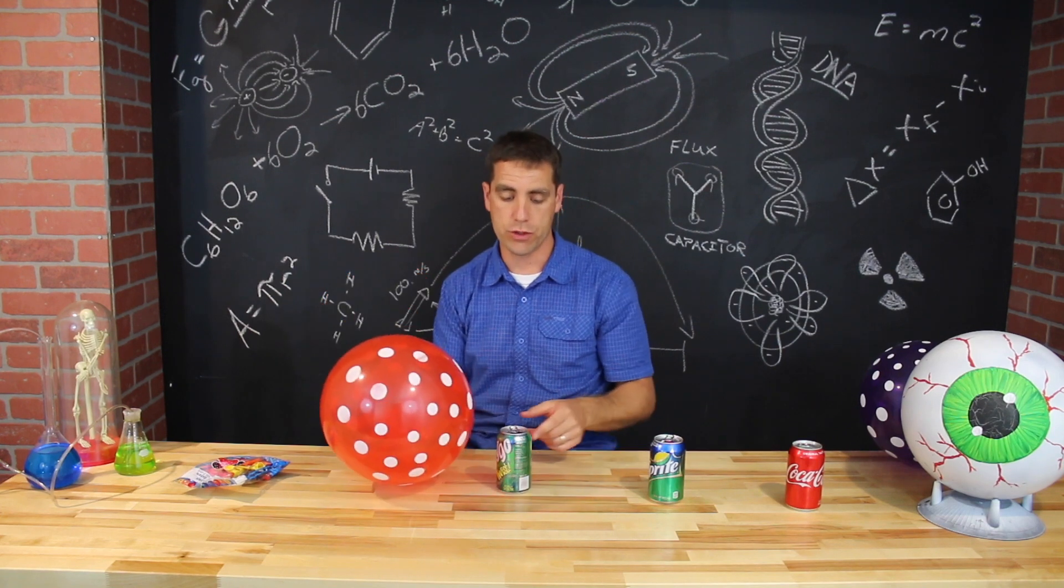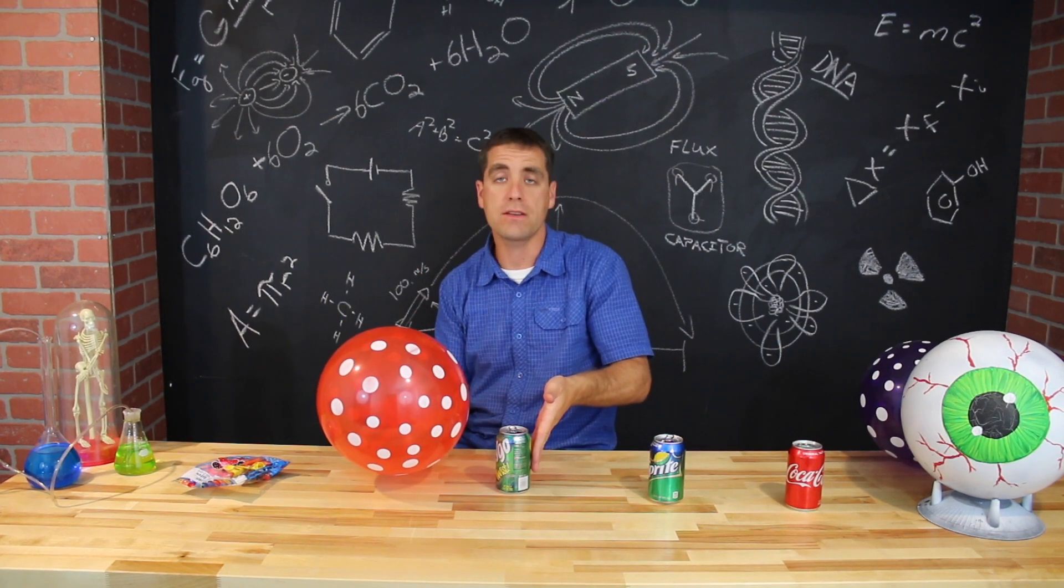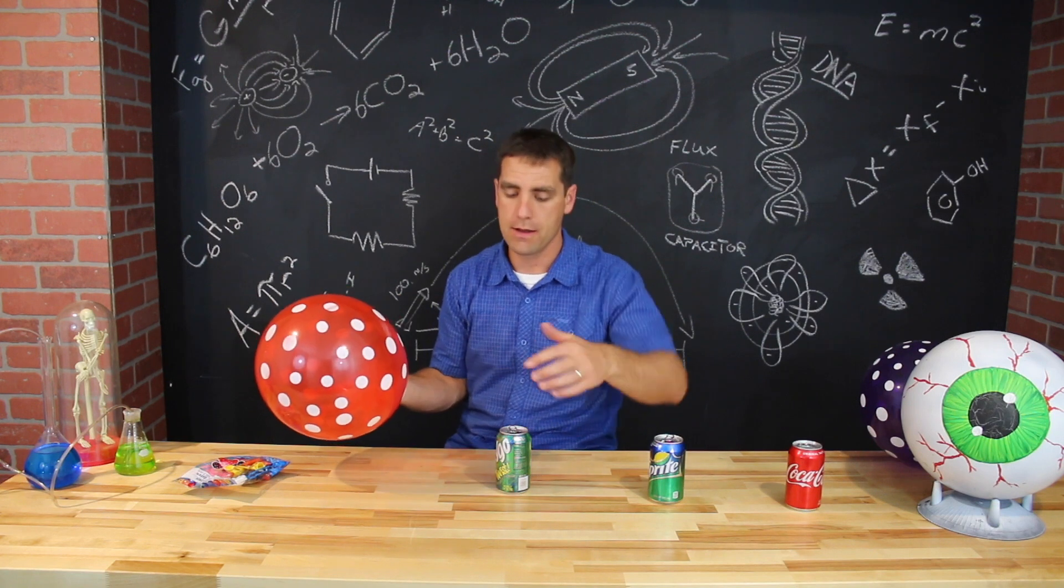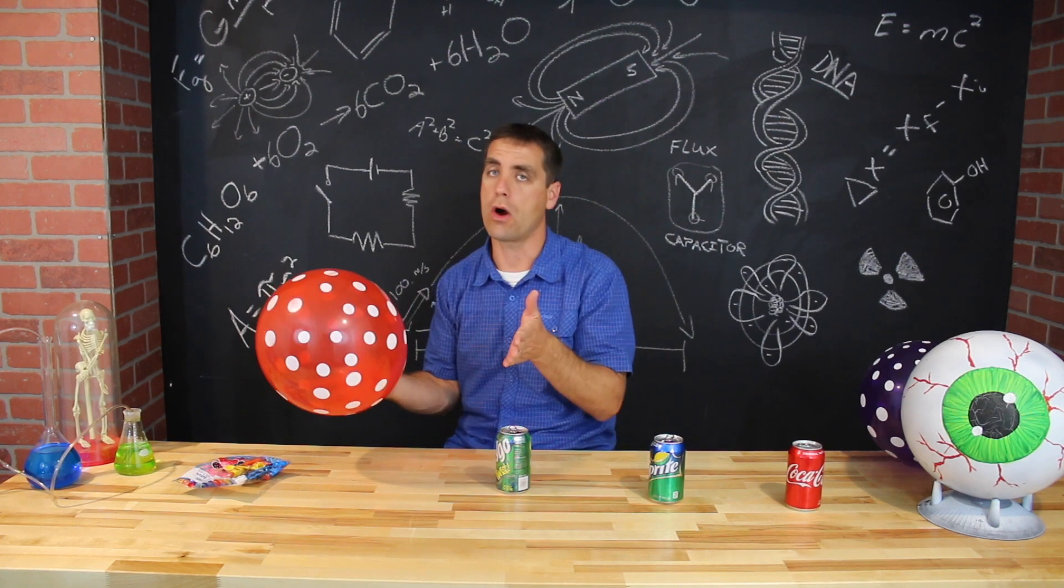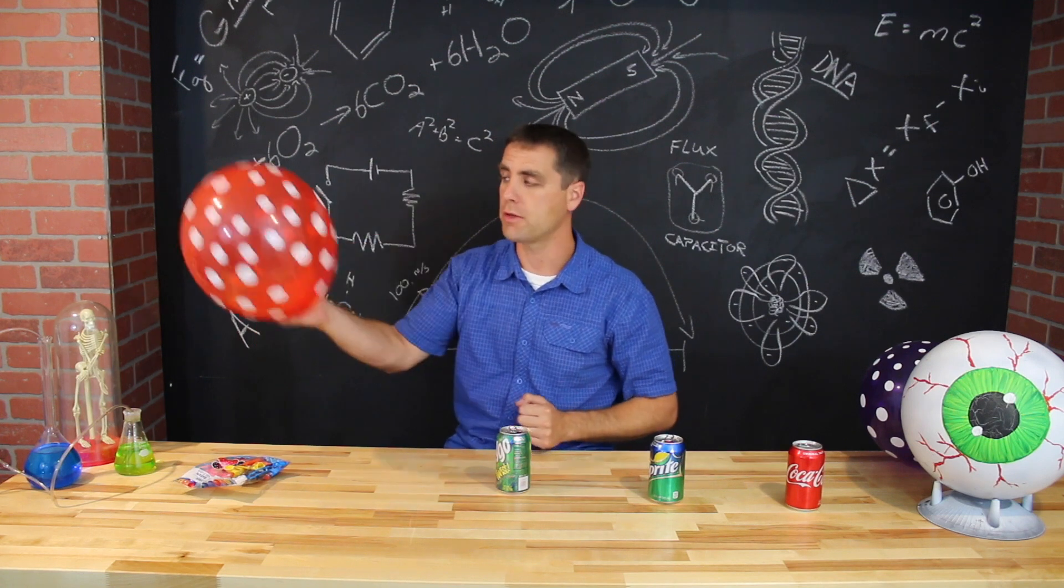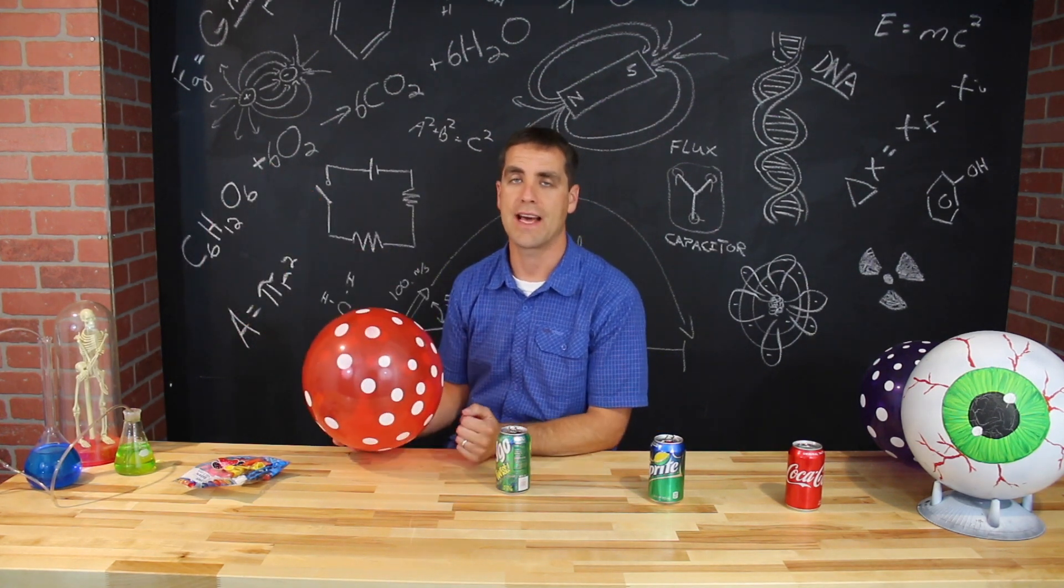Now it is true that as we're doing this, there are negatives on the far side of the can that are actually repelling. But the positive charges close to the balloon are stronger - they're closer, stronger - and you're able to pull the can with static electricity.